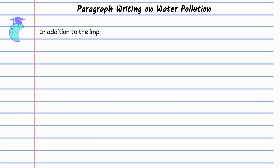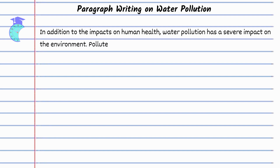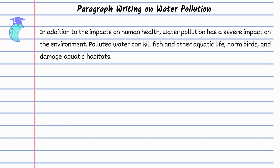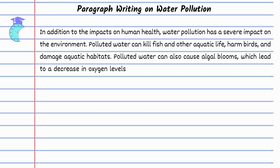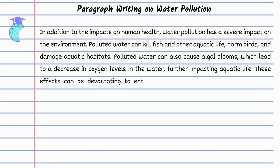In addition to the impacts on human health, water pollution has a severe impact on the environment. Polluted water can kill fish and other aquatic life, harm birds, and damage aquatic habitats. Polluted water can also cause algal blooms, which lead to a decrease in oxygen levels in the water, further impacting aquatic life. These effects can be devastating to entire ecosystems, including the animals that depend on them.